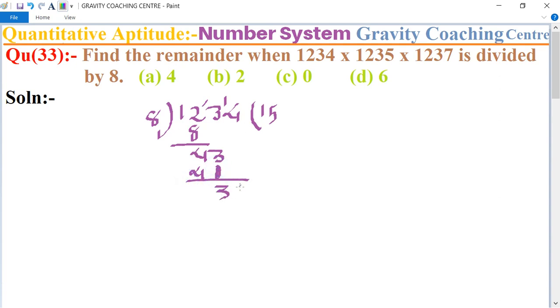Now we take 4 and 8. 8 into 4 is 32, so here 2 is the remainder. So 1234 divided by 8 gives remainder as 2. And if we divide 1235...